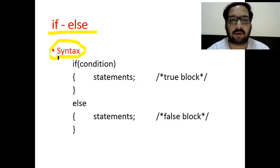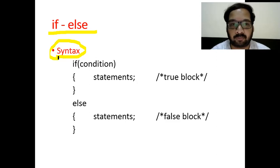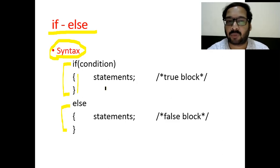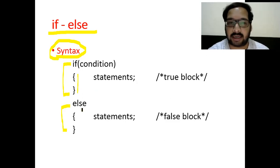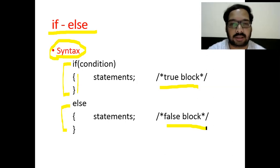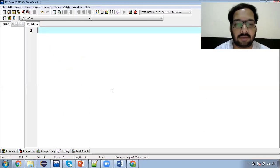The syntax rules indicate: with if-else and a condition, you have a true block and a false block. If the condition is true, the true block executes; if false, the false block executes. Now let's go to the compiler — I will explain a small example and then implement three proper programs.